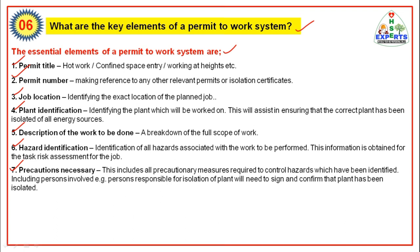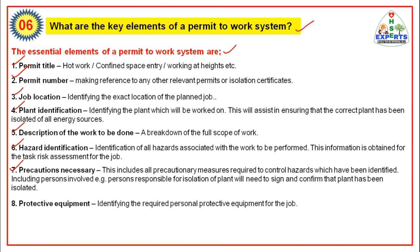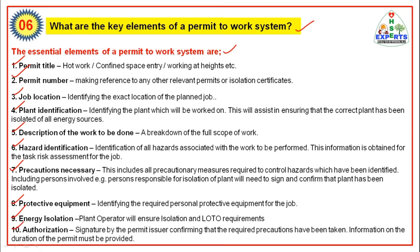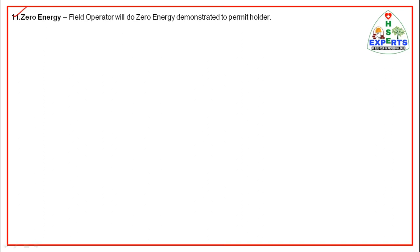Precautions necessary — all precautionary measures required to control identified hazards, including persons involved. For example, the person responsible for plant isolation will need to sign and confirm that the plant has been isolated. Personal protective equipment — PPE required will be identified for the job. Energy isolation — isolation requirements will be explained, and the plant operator will ensure isolation and LOTO requirements. Authorization — signature by the permit issuer confirming that the required precautions have been taken, along with information on the duration of the permit. Zero energy — the field operator will demonstrate zero energy to the permit holder.